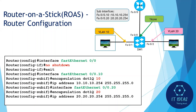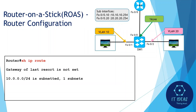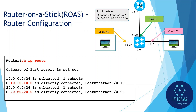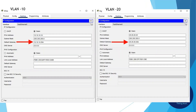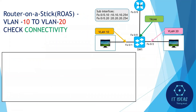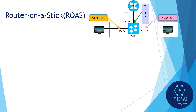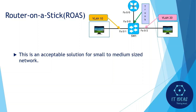VLAN 20 hosts will use that IP address as their default gateway. Now we will check the routing table — we have the routes for VLAN 10 and VLAN 20. We can also see the configurations of the VLAN 10 and VLAN 20 PCs. Checking PC connectivity between VLAN 10 and VLAN 20 — it is working successfully. This is an acceptable solution for small to medium sized networks.